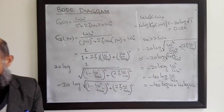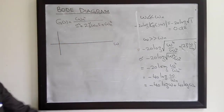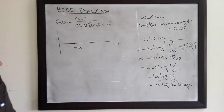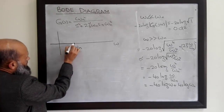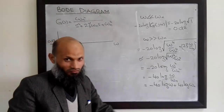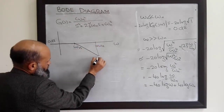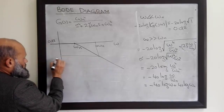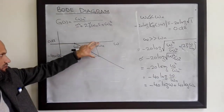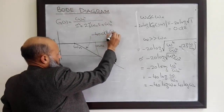Drawing this magnitude plot on the logarithmic frequency axis: at low frequencies, when ω is much less than ωn (the corner frequency), the magnitude is 0 dB. The magnitude plot then drops with a slope of minus 40 dB per decade. So in one decade — for example from ωn to 10ωn — the magnitude drops by 40 dB, giving a slope of minus 40 dB per decade.